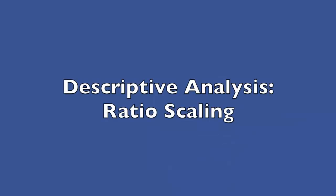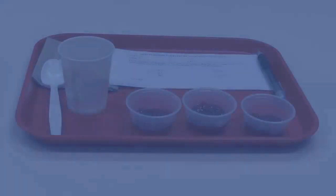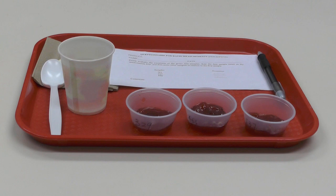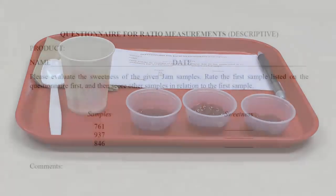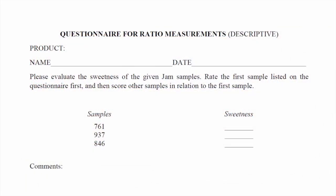You can also use ratio scaling for sensory analysis. In this type of test, samples that are only different in one attribute are randomly assigned to panelists, and panelists are asked to rate the first sample and then rate the others in relation to the first one. Here is an example of a ratio scaling questionnaire. For example, if the second sample is twice as sweet as the first one, and you give the first sample a rating of 2, then the second sample should be given a rating of 4, which is twice the rating of the first sample.